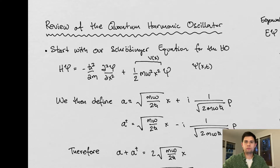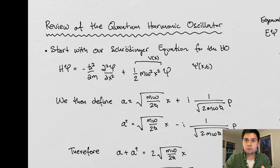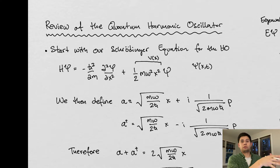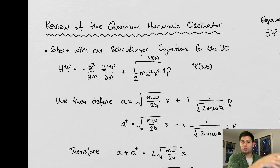We're going to review the quantum harmonic oscillator — this is a review, probably 10 to 15 minutes. We're not talking about quantum fields yet. What we've done so far is cover a lot of classical field theory from Klauber's 'Student Friendly Quantum Field Theory,' and now we're covering quantum mechanics before moving on to quantum fields.